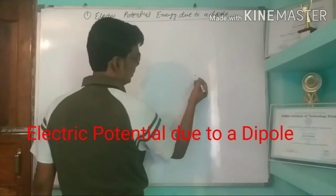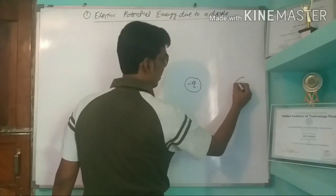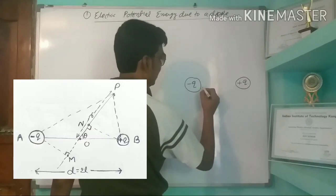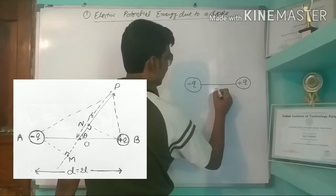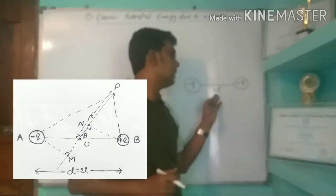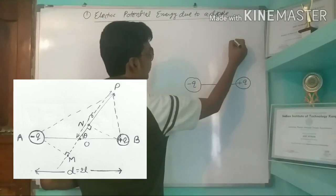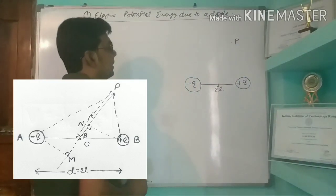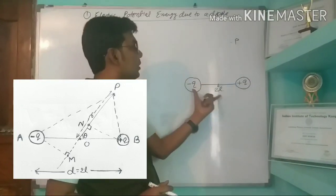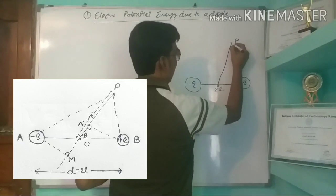Let us suppose a dipole at a certain point. The distance between the two charges of the dipole is 2L — we will take 2L as the calculation will be easier. Suppose there is a point P on the axis, and we have to calculate the electric potential energy due to this dipole at point P, making an angle theta.